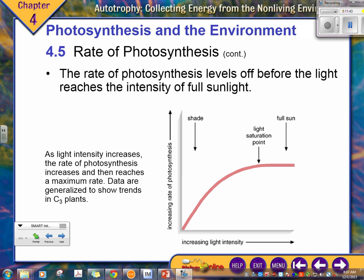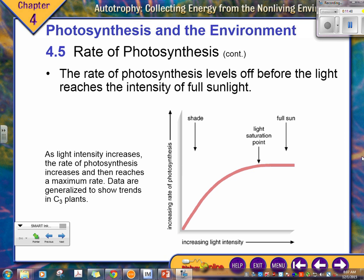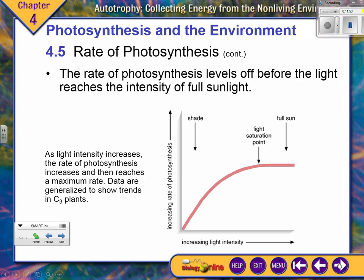What about temperature? Looking at the graph, there is an optimal temperature — right around 25°C, roughly room temperature. As it gets hotter, that's a problem. As it gets colder, photosynthesis slows down.